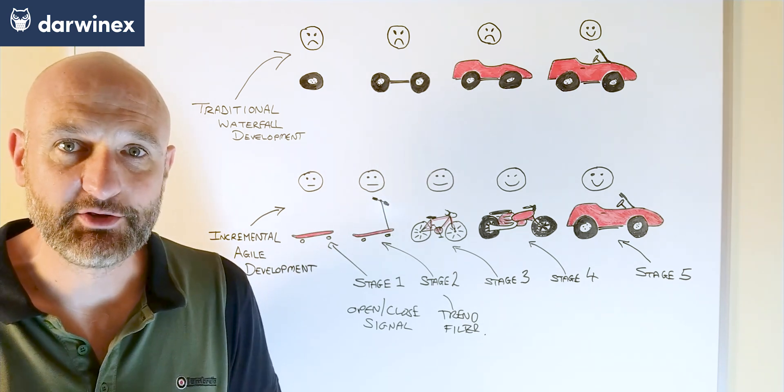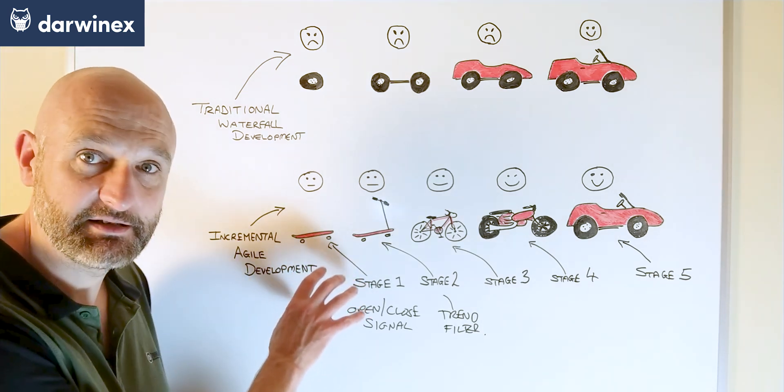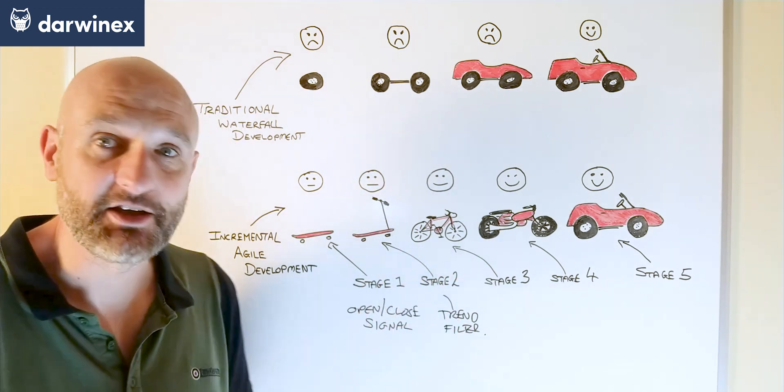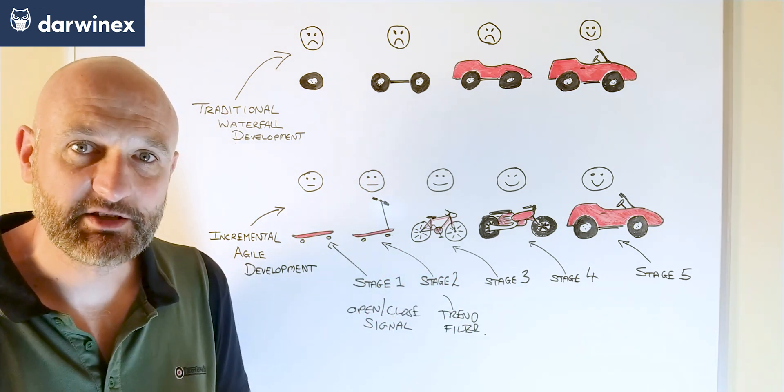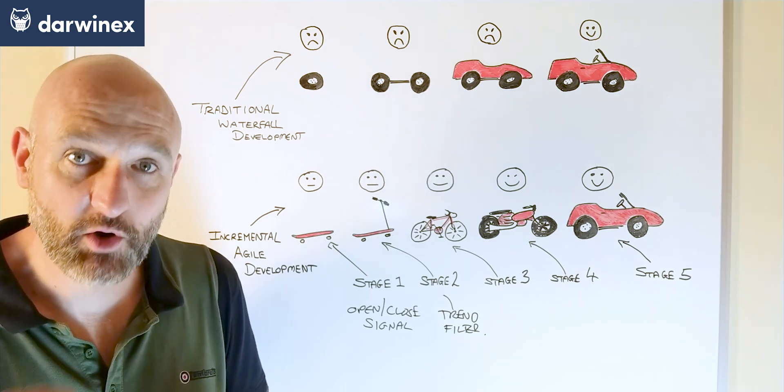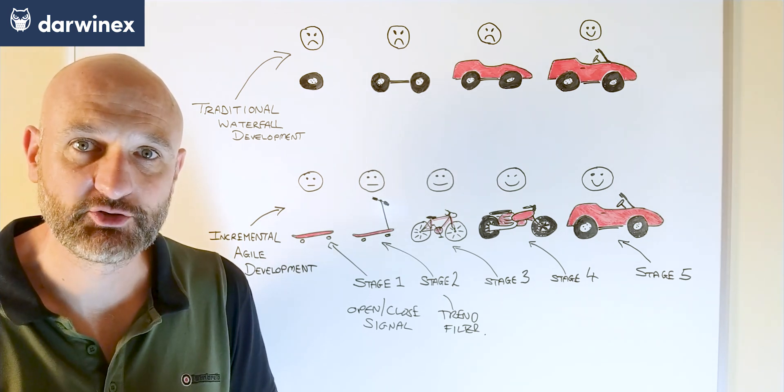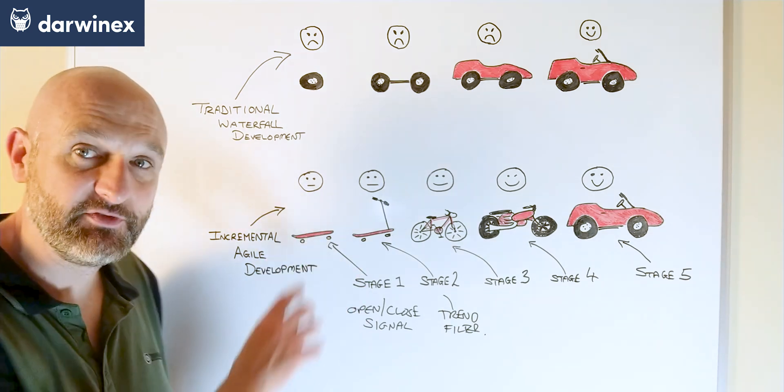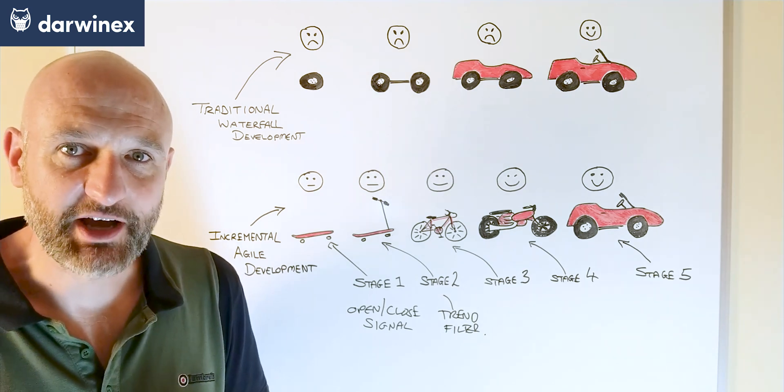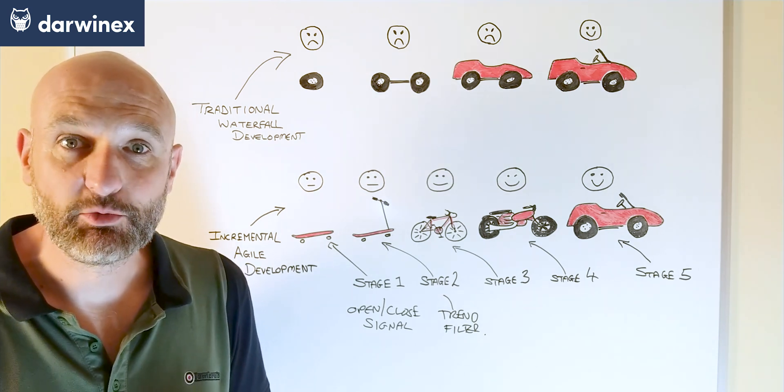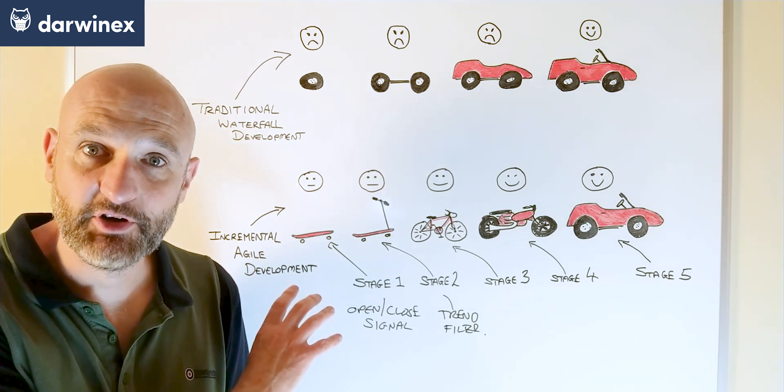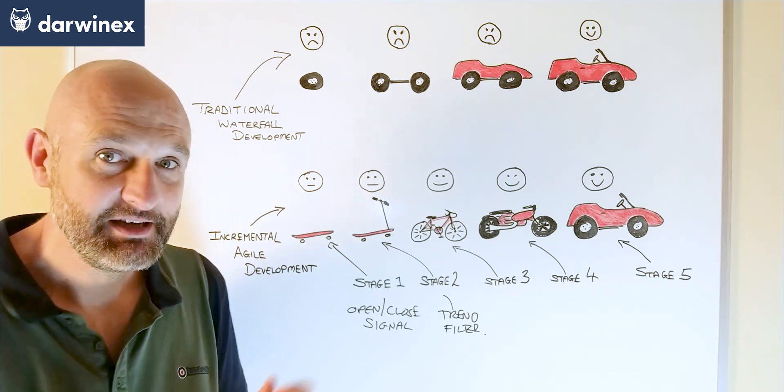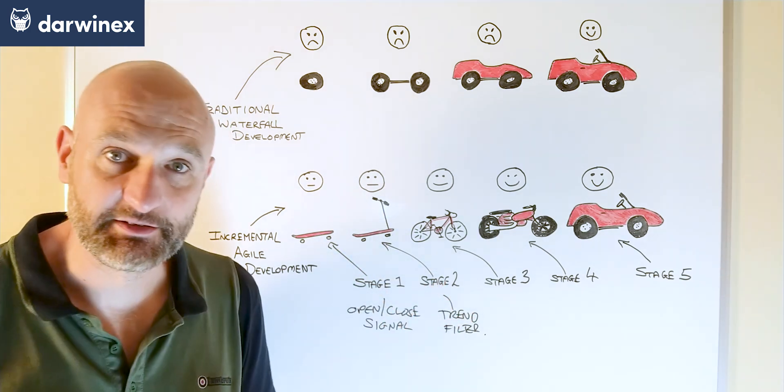Here we need to compare the trades that were generated in this back test at stage one with the trades that are generated in the second test here using the trend filter. So it's necessary to make sure that the trades that were taken when they were in the direction of the prevailing trend are identical to the trades that were produced here in this first back test. But of course, we also need to check the opposite use case so that signals that were initially executed in the first test, but were against the prevailing trend no longer get opened here now that we're using a trend filter.